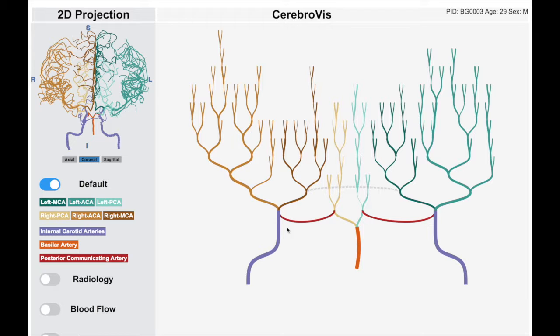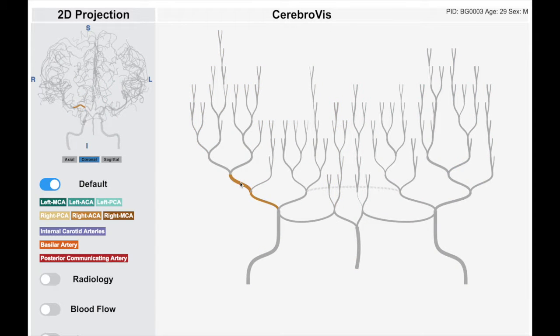Here you can see that the arteries are roughly positioned according to their position in the real human brain.